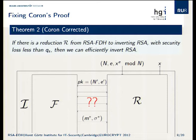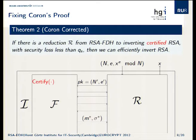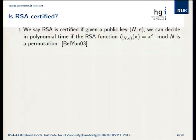When this happens, we don't really know what goes on anymore. In particular, the signatures might not be unique anymore — the whole protocol isn't well defined. This is where the reduction falls down. But the good news is we can correct this. What we need is certified RSA, which means that the forger gets this extra public certification function.